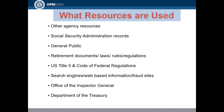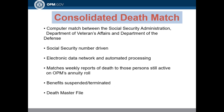Resources used include other agency resources, Social Security Administration records, tips from the general public, retirement documentation, laws, rules and regulations, the U.S. Title V Code of Federal Regulations, search engines, web-based information, fraud sites, the Office of Inspector General, and the Department of the Treasury. The consolidated death match between Social Security, the Department of Veterans Affairs, and the Department of Defense is Social Security number driven, using an electronic data network and automated process that matches weekly reports of death to those persons still active on OPM's annuity roll, with benefits suspended, terminated, and recorded in the death master file.